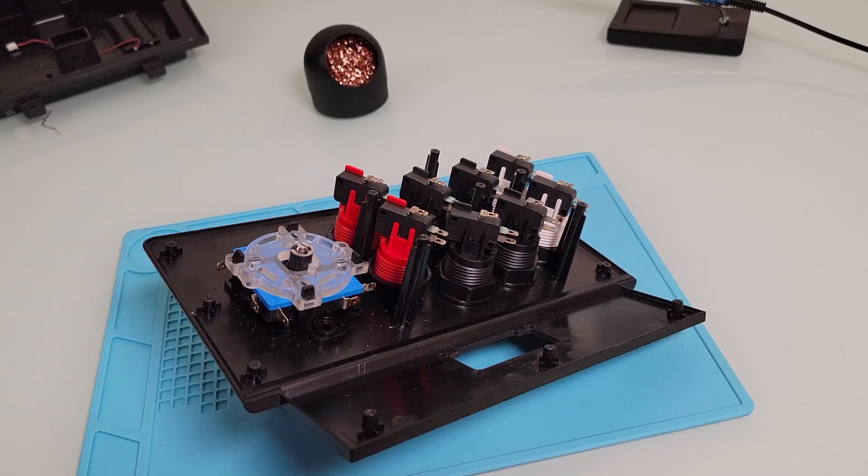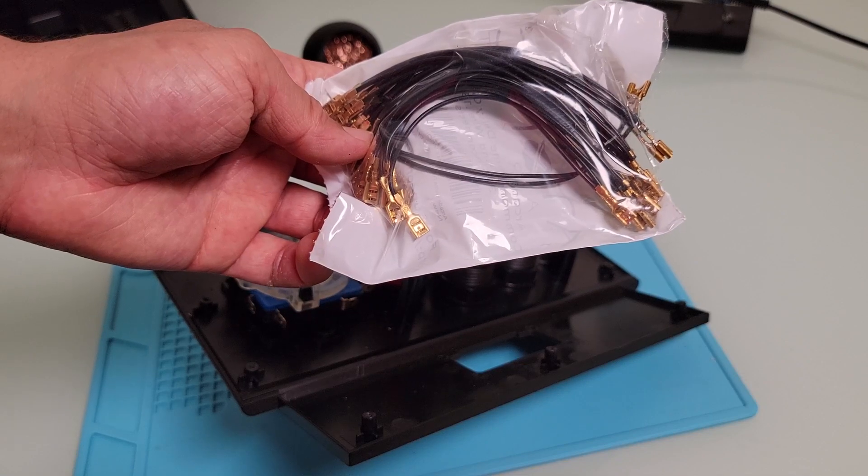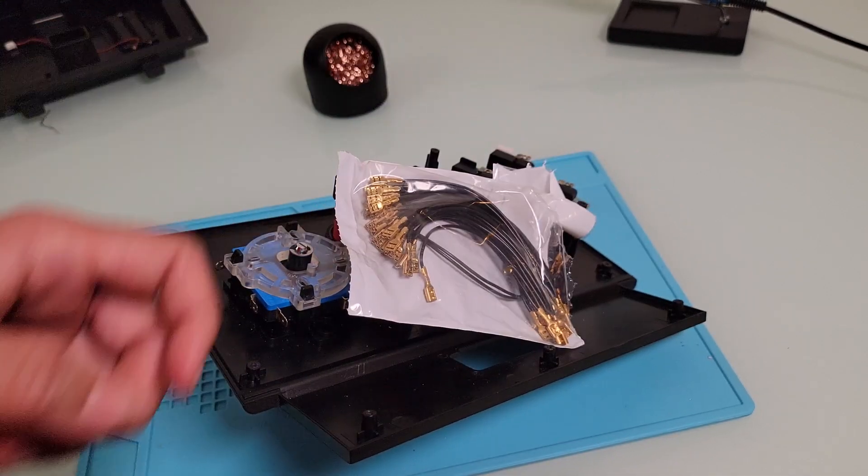The next step is to connect these daisy chain cables to each ground connector on the controller. However, I have to manually create the daisy chain.